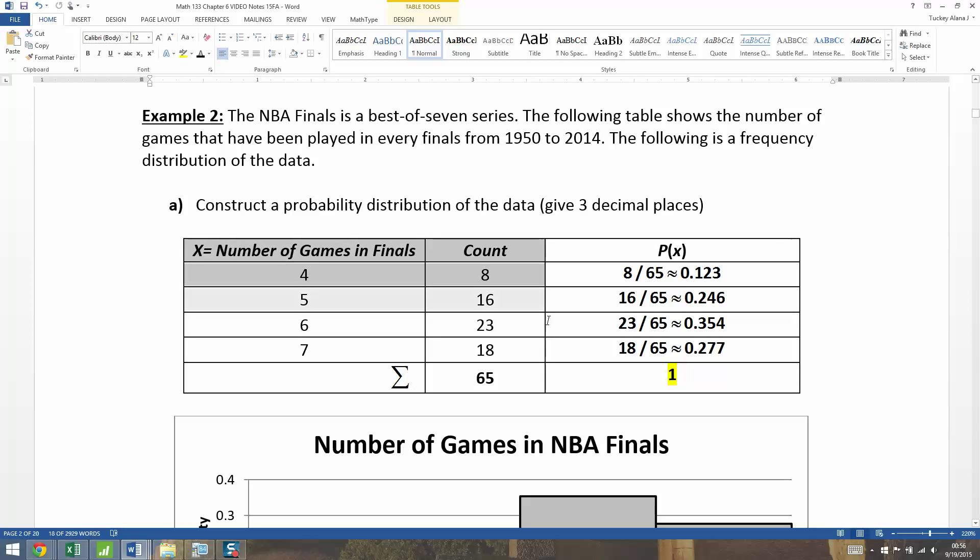So here's the probability distribution, technically not the count part of it, but the x variable and the probabilities. Those together make a discrete probability distribution.